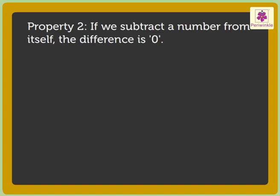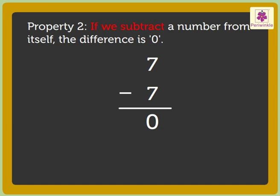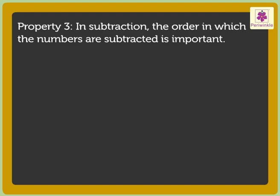Property 2: if we subtract a number from itself, the difference is 0. Let us take the numbers 7 and 7. If we subtract 7 from 7 — that is, we subtract 7 from itself — we get the answer 0. This tells us that if we subtract a number from itself, the difference is 0.